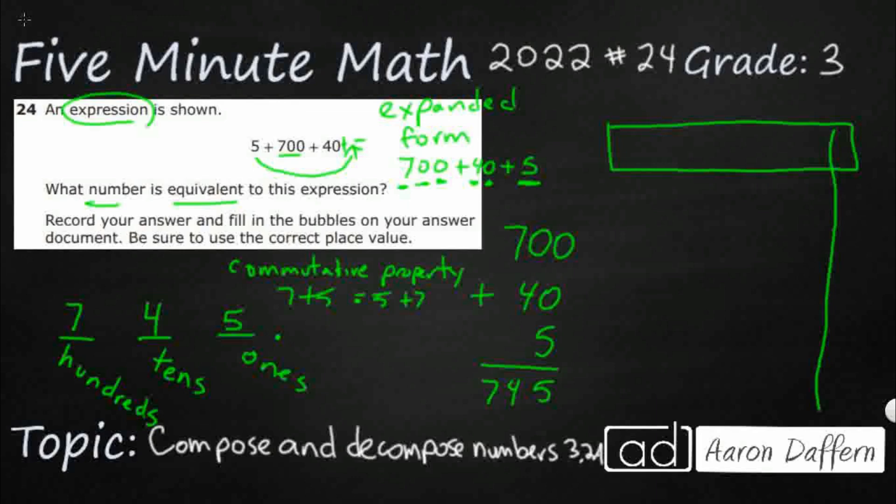We've got a little tiny column there with the decimal. There's no bubbles, we can't do anything with that. Our answer document is only going to have three columns that we can actually bubble in. We need to make sure that we've bubbled in 745. Write that across the top.